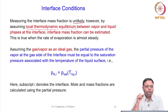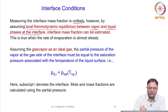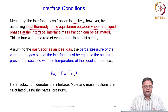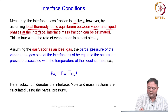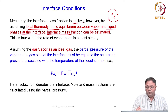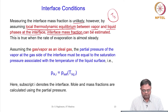We can assume local thermodynamic equilibrium, meaning evaporation takes place with thermodynamic equilibrium prevailing between the vapour and liquid phases at the interface. Given a fixed temperature at the interface, the number of molecules leaving the liquid phase equals those entering from the vapour phase. Once the surface temperature T_s is known, we can calculate the interface mass fraction Y_AI.